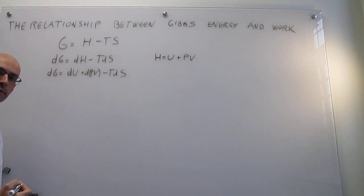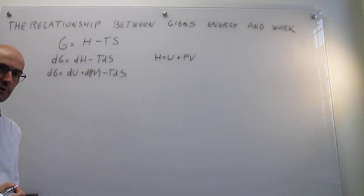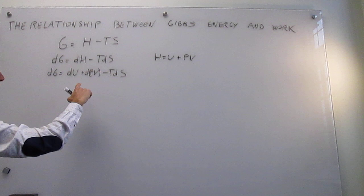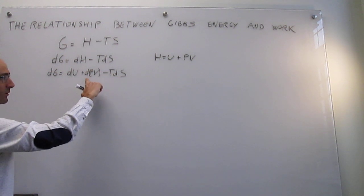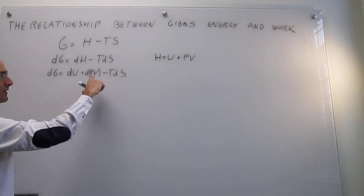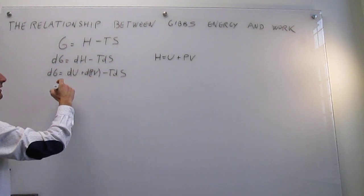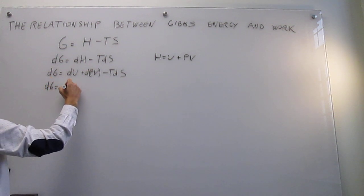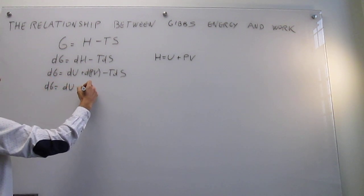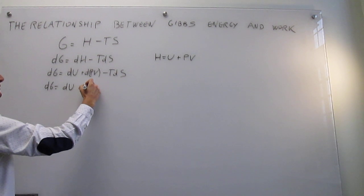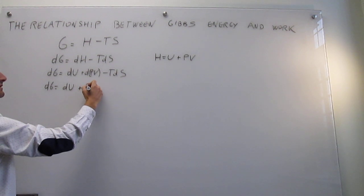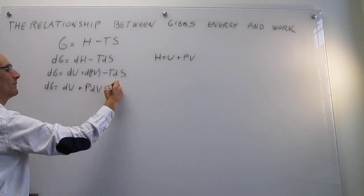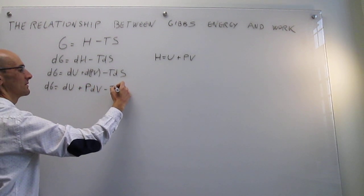Now we're going to assume that this process is taking place under constant pressure. When we evaluate the differential of pV, since pressure is constant it can be factored out, and we get: dG = dU + p dV - T dS.